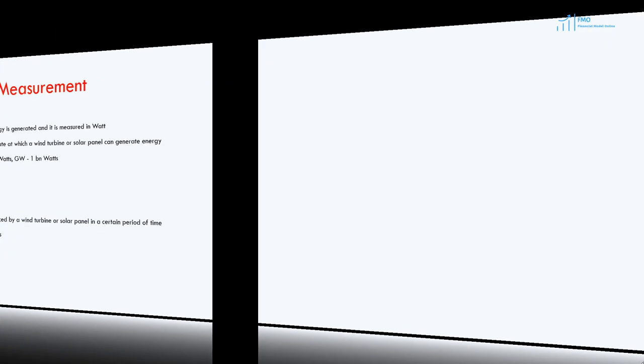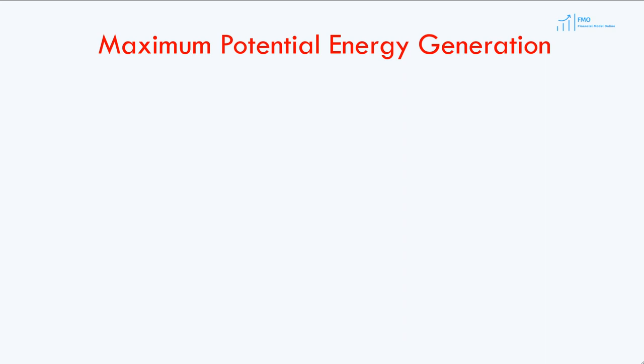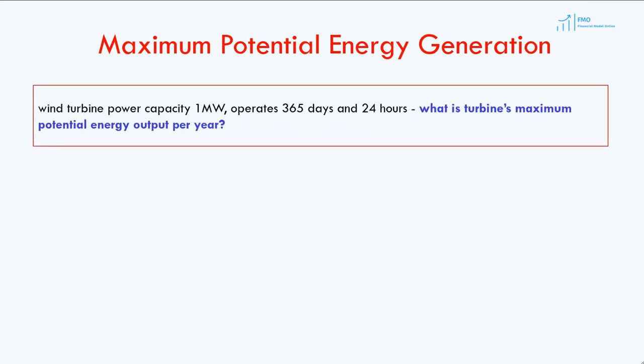Let's review an example of an energy production calculation. Suppose we are looking at a wind turbine with a maximum power capacity of 1 megawatt. The operation days are 365 days, and operation hours in each day are 24 hours. So, what is the turbine's maximum potential energy output per year? We have to multiply the power capacity by the number of total hours the wind turbine will operate in a year.